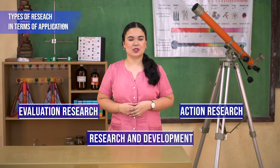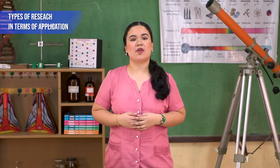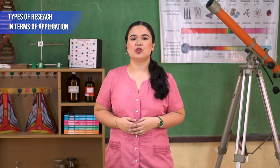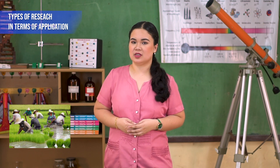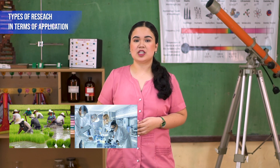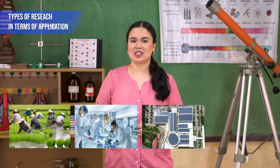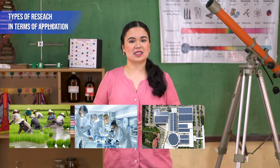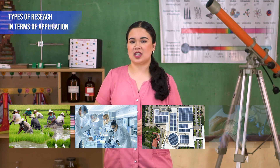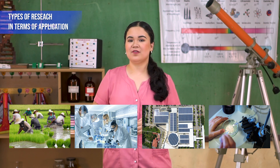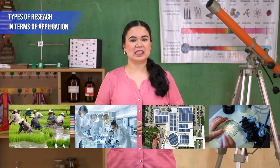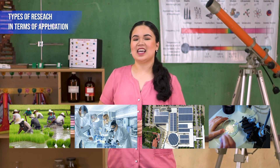Examples of applied research may investigate ways and means to improve agricultural crop production, treat or cure specific disease, improve the energy efficiency of homes, offices, and modes of transportation, and suggest innovative and modified methods of measurement in any specific investigation.